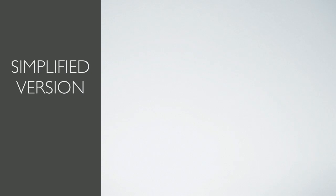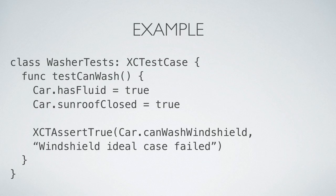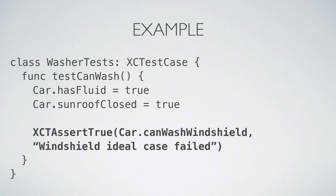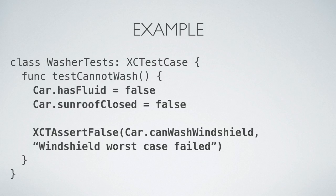Testing at its simplest: we set inputs and test for the desired or expected outputs. Remember our windshield washer example? Let's write a test case for that. First we'll need a set of inputs for our desired scenario — we have fluid and our sunroof is closed. And we want to test for the expected output: I'm asserting true that yes, with these conditions, I can operate the windshield washer. Of course, our test wouldn't be complete if we didn't test for failure too.